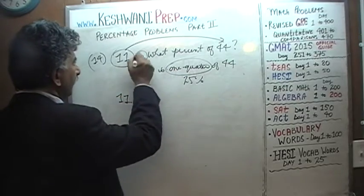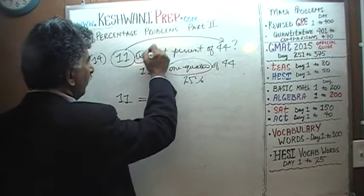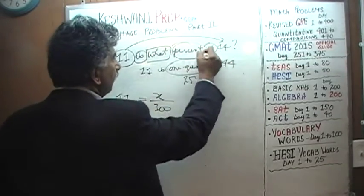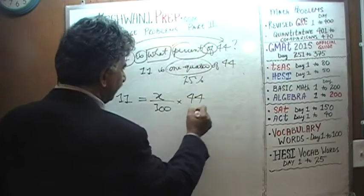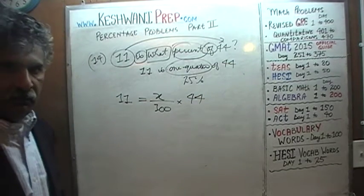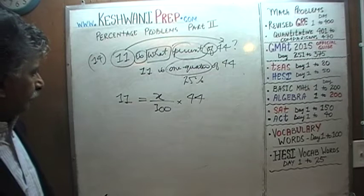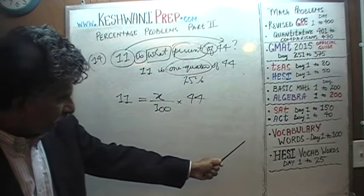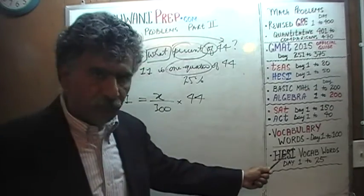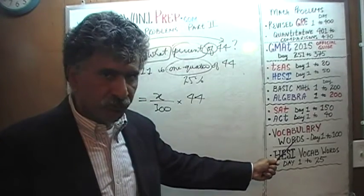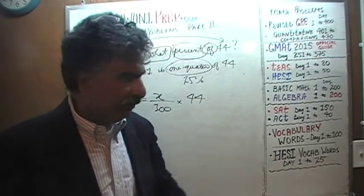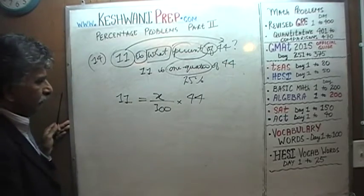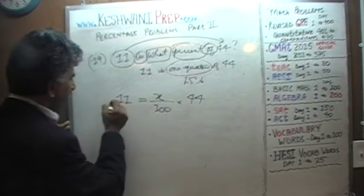Setting up the equation: 11 equals x over 100, times 44. As you can see, this turns into a veritable freak show — 'veritable' being something we learned on day number 61. To get x by itself, multiply both sides by 100 and divide by 44.